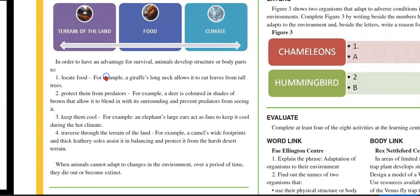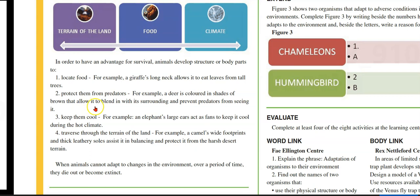In order to have an advantage for survival, animals develop structures or body parts to: one, locate food. For example, a giraffe's neck allows it to eat leaves from tall trees. Two, protect them from predators. For example, a deer is colored in the shade of brown that allows it to blend in with its surroundings and prevent predators from seeing it.